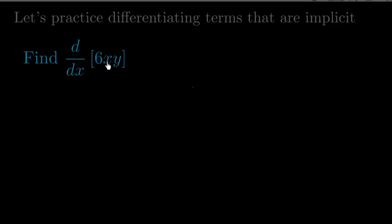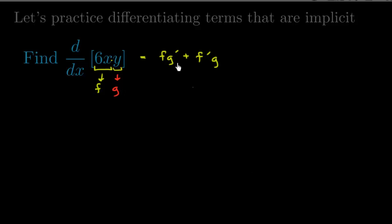Let's find the derivative of 6xy. Remember that y is a function of x, so we actually have two functions here — we have 6x and y — making this a product of two functions. The product rule is fg prime plus f prime g. So f is 6x and g is y. That gives us 6x times y prime, plus f prime which is 6, times g which is just y. That is the product rule applied to 6xy.